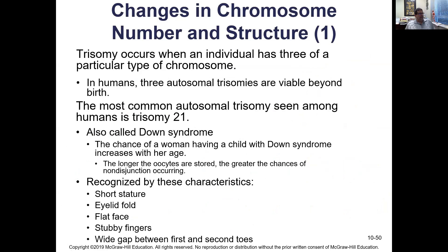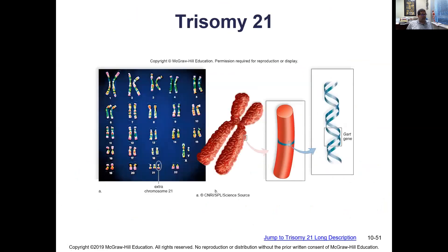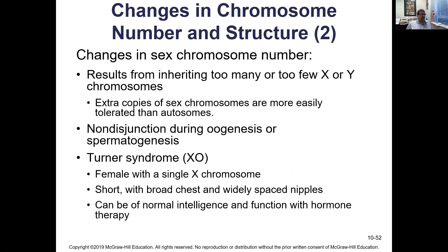The most famous example is Down syndrome — trisomy 21. Features include short stature, eyelid fold, flat face, stubby fingers, and a wide gap between the first and second toes. These individuals may have some mental disability and a lifespan into their late 50s, with some heart problems. The older a woman is when having children, the more likely she is to have a trisomy 21 baby — thought to be because the female body is less likely to detect and reject the chromosomal error.